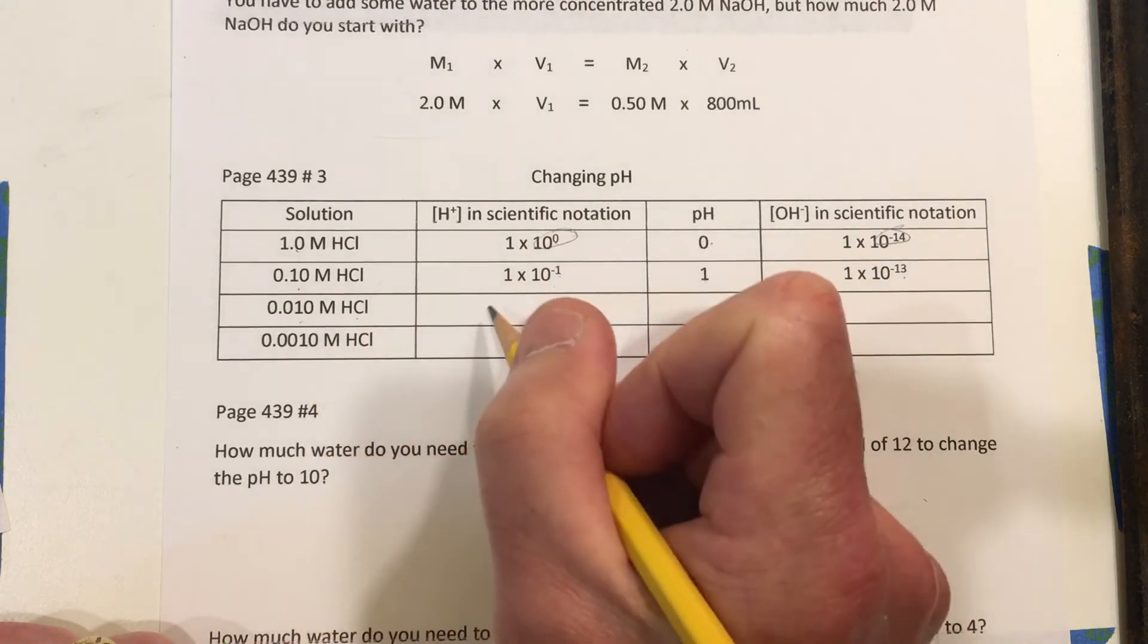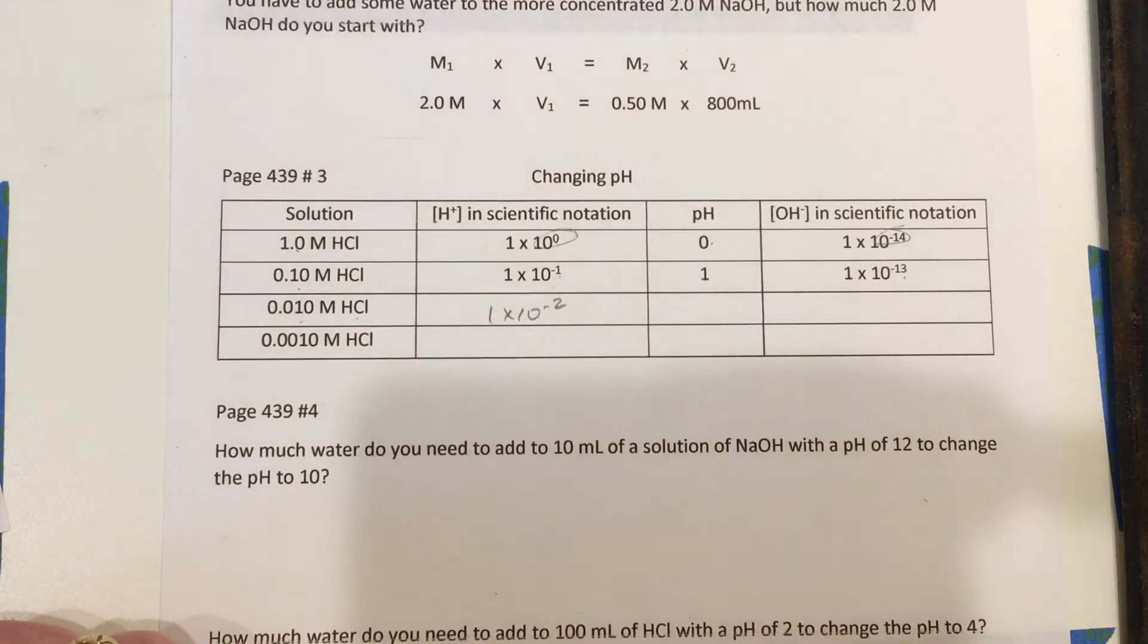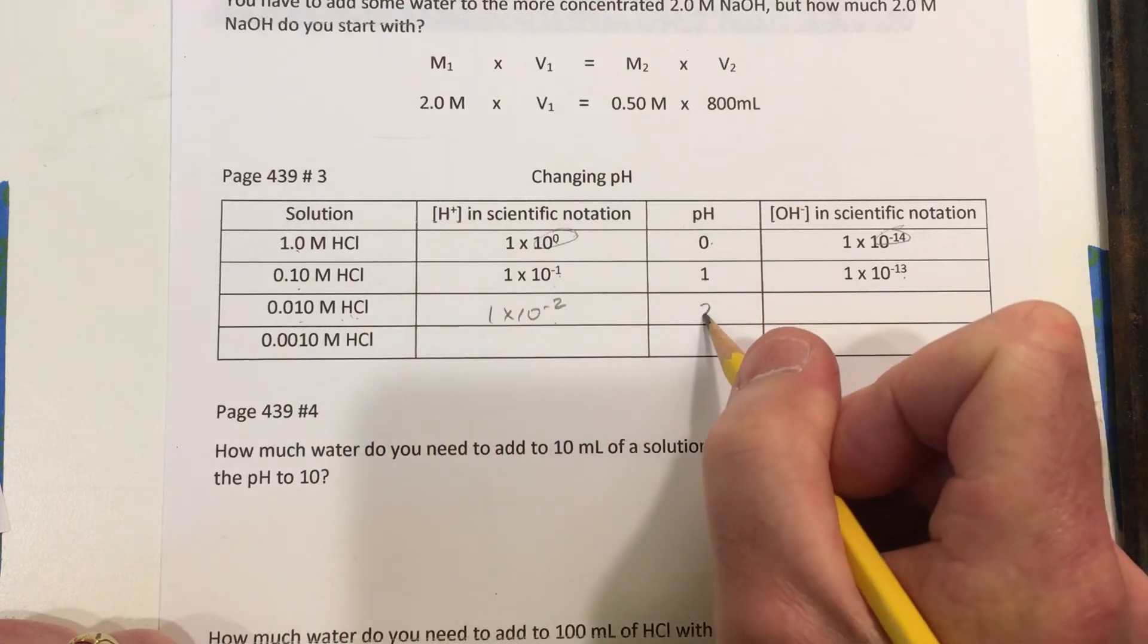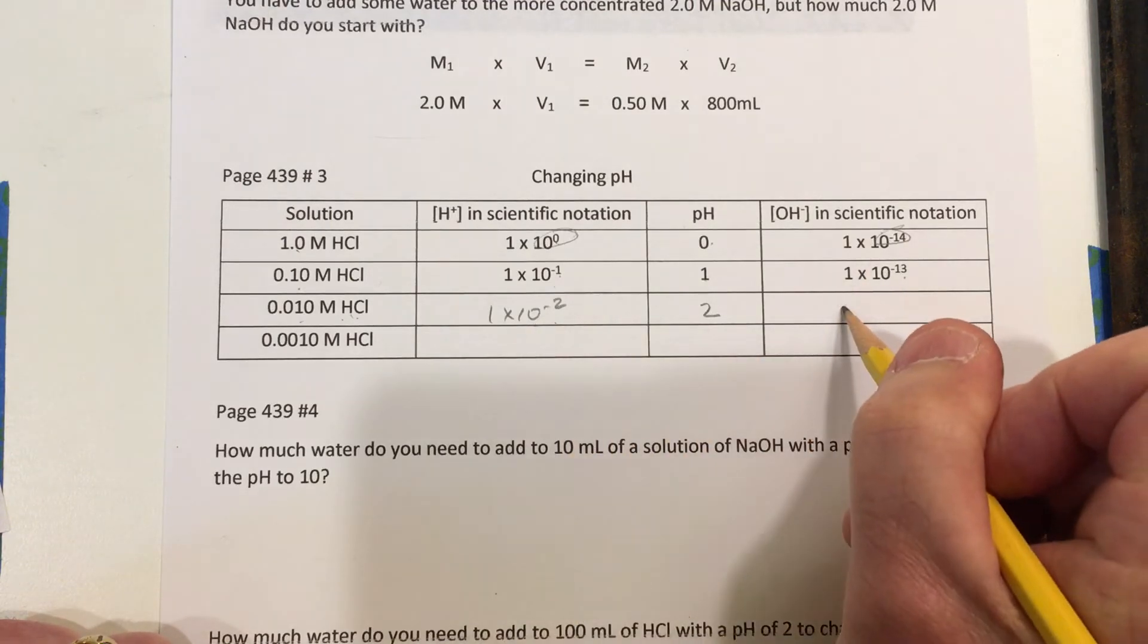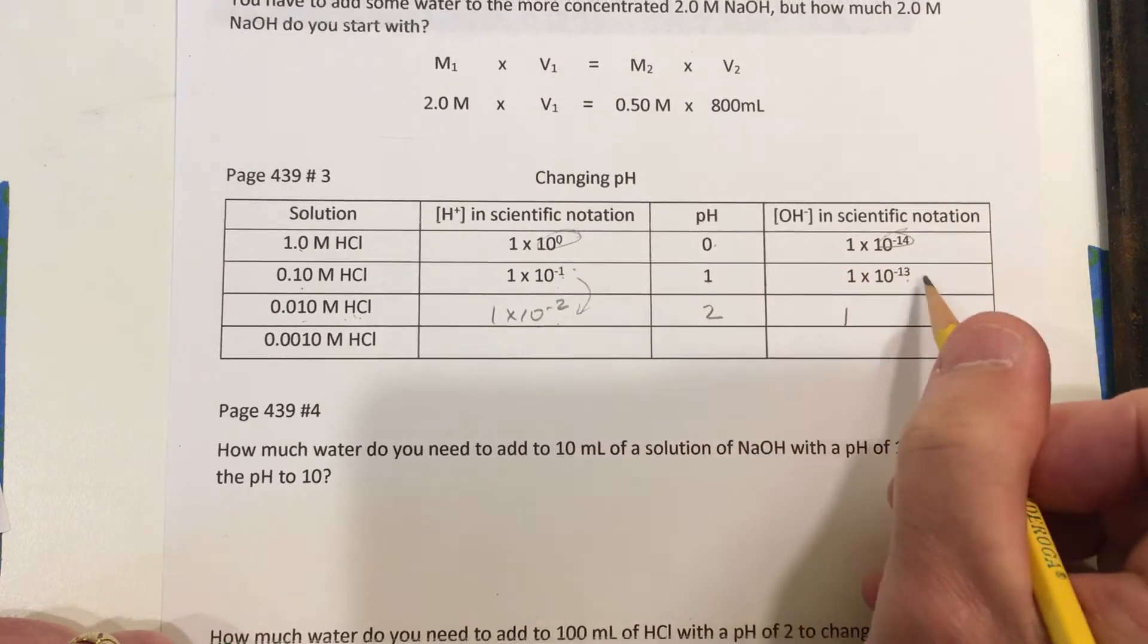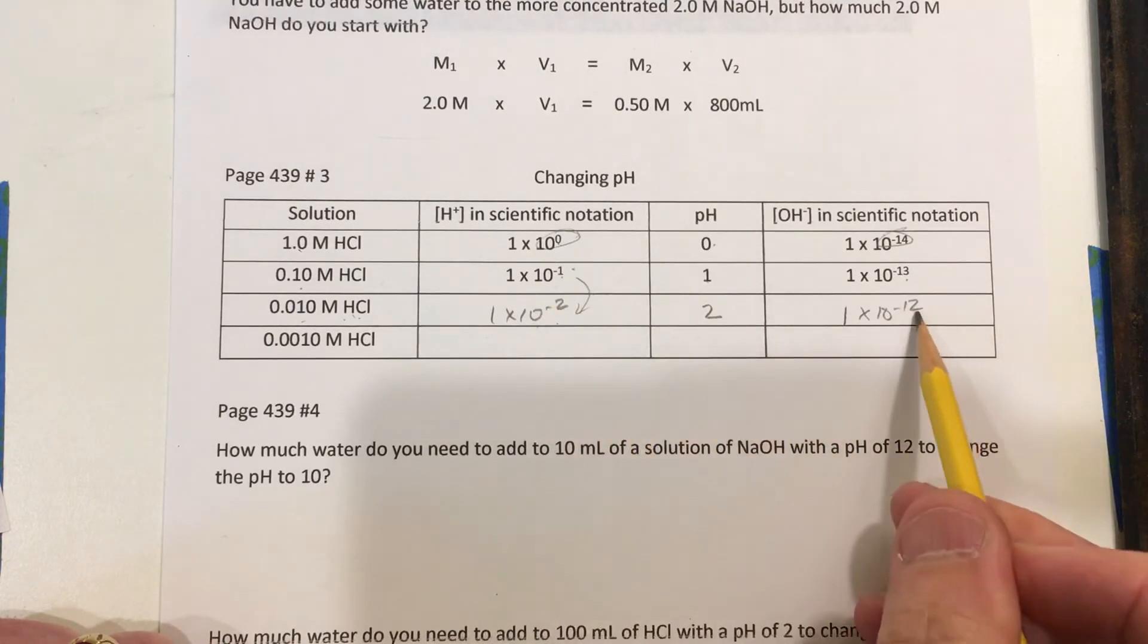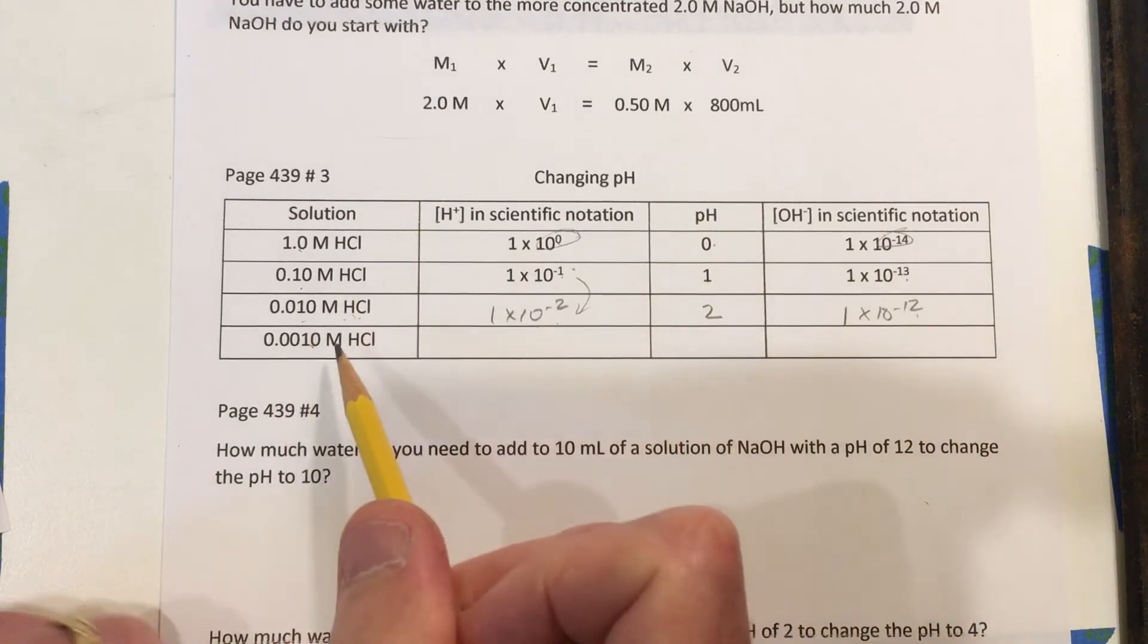Here, 0.010 molar HCl, well, that's 1 times 10 to the negative 2. And the concentration is one-tenth here as it is here. So the pH will change by 1 towards 7. We're diluting it. And here the concentration of the OH has to be going up as this has been going down. So this is going to go up to 1 times 10 to the negative 12. The 2 add up to 14. And finally, this one looks like this.